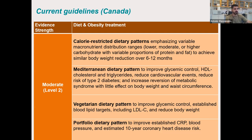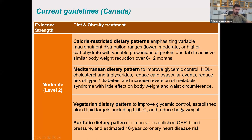We have moderate evidence that calorie-restricted dietary patterns with variable macronutrient distributions — whether low, moderate, or high carbohydrate — can achieve similar body weight reductions over 6 to 12 months, so there is no need to focus on any specific macronutrient distribution as long as we are on a calorie-restricted dietary pattern. We also know that the Mediterranean diet can improve glycemic control, triglycerides, and reduce cardiovascular events even in the absence of any change in body weight or waist circumference. A vegetarian dietary pattern helps reduce body weight and improve glycemic control and blood lipids, as does the Portfolio diet.